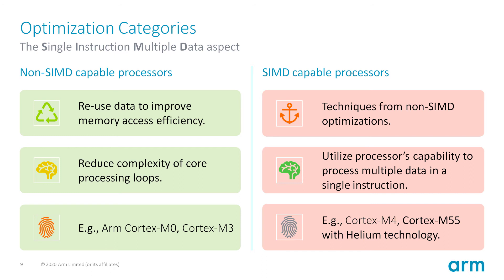For non-SIMD capable processors, optimization is mostly about ensuring efficient memory accesses and reducing the complexity of nested loops. An example is removing any conditional statements in the innermost loop.